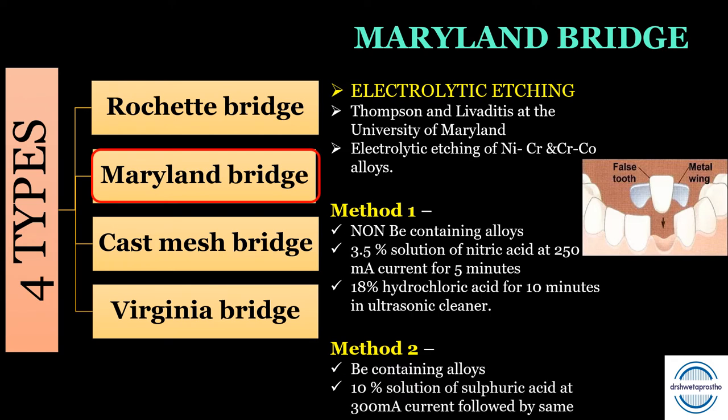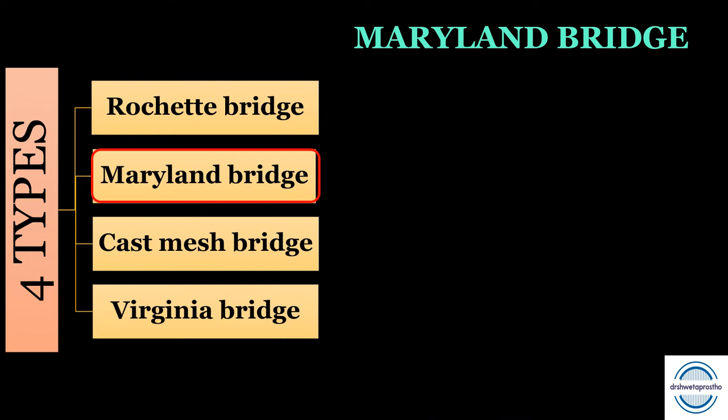Method 2 was for beryllium-containing alloys — instead of nitric acid, 10% sulfuric acid was used at 300 milliampere current, followed by placement in hydrochloric acid.